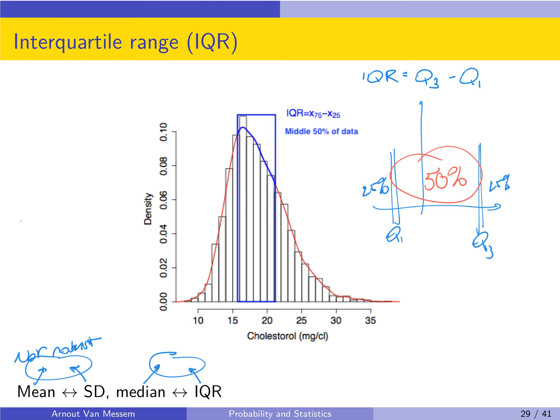There is one last measure of spread, which is the range — the most common and easiest to calculate. It is the maximal value minus the minimal value, so it is the total range of all your data. As you can guess, it is extremely influenced by outliers, because your outliers will always be the maximum or the minimum value, or both. So once you have at least one outlier, your range blows up.